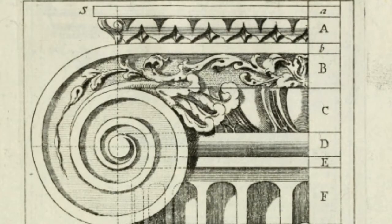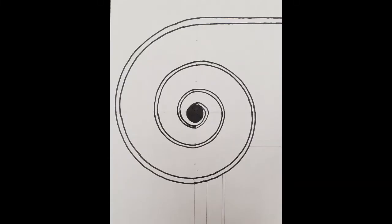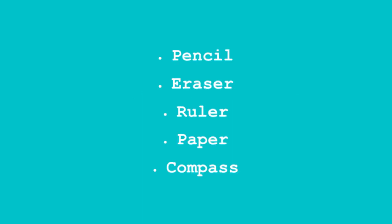Using Palladio's writings, we'll create our own spiral. You're going to need a pencil, an eraser, a ruler, some paper, and a compass.